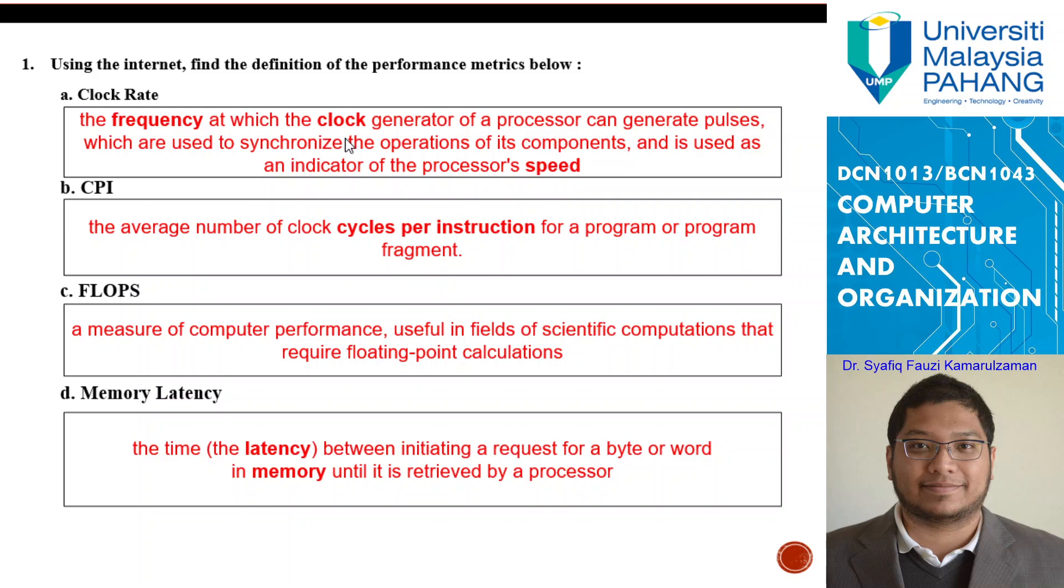When you talk about your processor performance which involves when you buy PC computers, for example, i7, 4 GHz. Those 4 GHz, 3.2 GHz represent the clock rate of your computer.